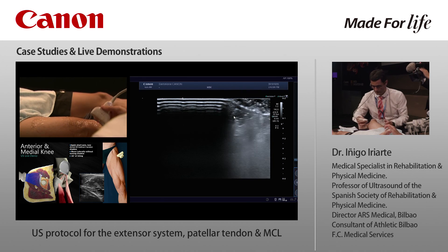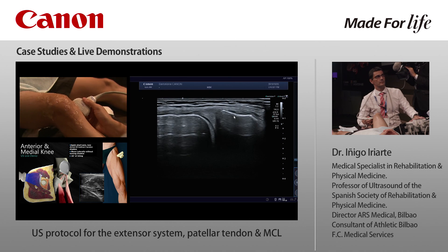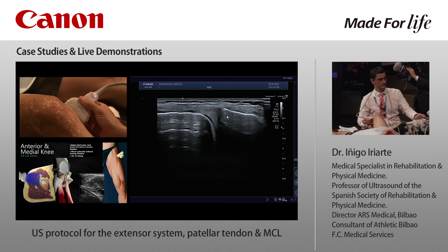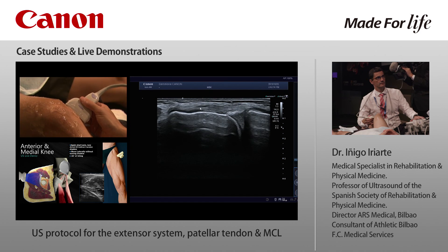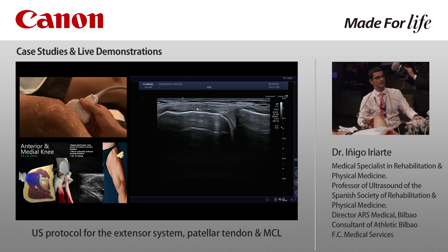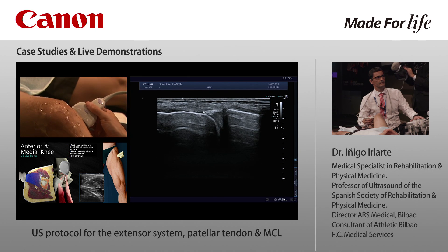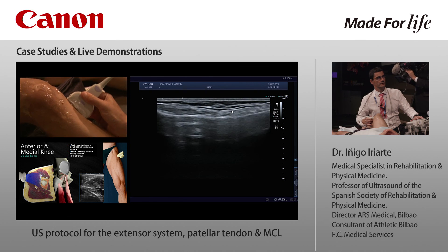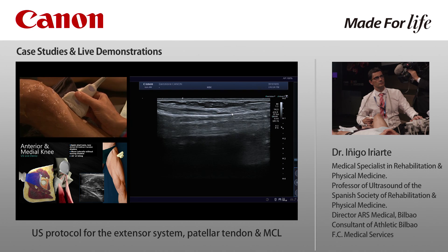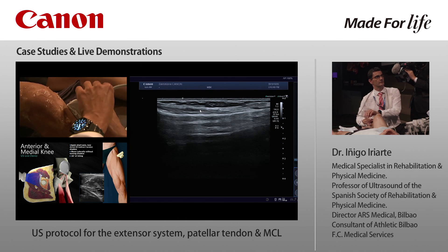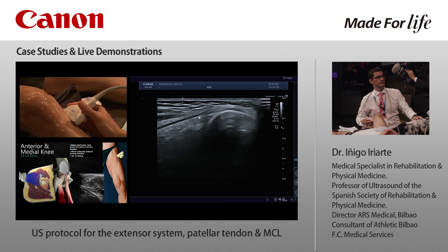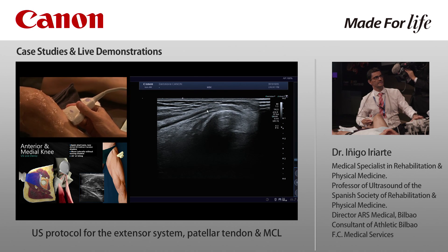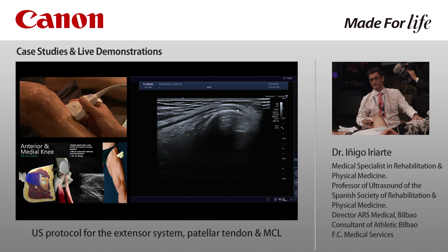To finish, the medial collateral ligament. We place the probe on the medial side. You can see the medial meniscus, the superficial layer of the medial collateral ligament, and the deep layer — with the meniscofemoral ligament and the meniscotibial component. Following the ligament distally, the superficial component ends here, and this is the pes anserinus. Turning the probe, you can see the pes anserinus inserting into the tibia.